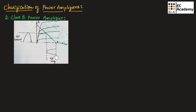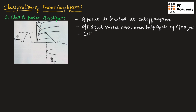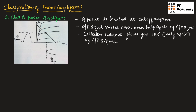This is the collector voltage of the class B power amplifier. In a class B power amplifier, the Q point is located at the cutoff region. The collector current flows for 180 degrees, which is half cycle of the input signal, and the output signal varies only for 180 degrees or half cycle of the input signal.